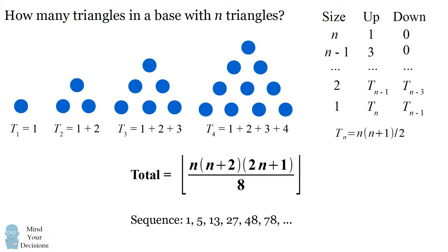The sequence starts out 1, 5, 13, 27 was what we had when we had four triangles in our grid. It continues 48, 78, and so on.